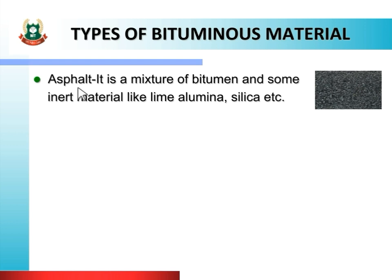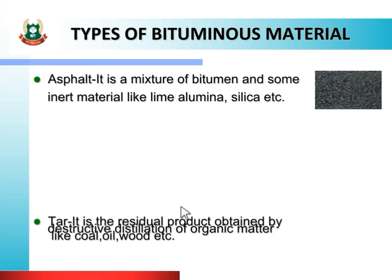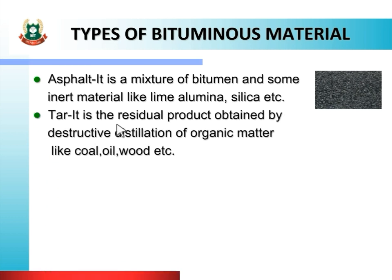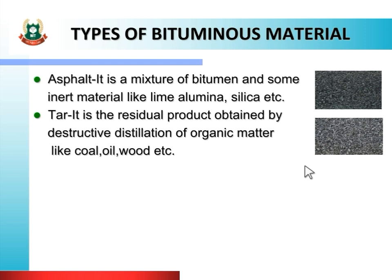Another bituminous material is tar. It is the residual product obtained by destructive distillation of organic matter like coal, oil, wood, etc. As shown in the figure, this is the type of bituminous material called tar. Organic matter — coal, oil, wood, etc. — in ko jalaane ke baad jo product bachta hai, ussi se tar banaate hain.